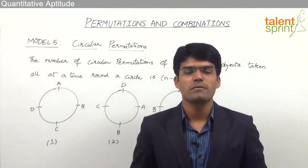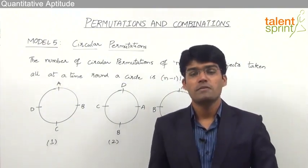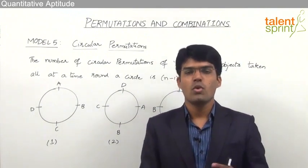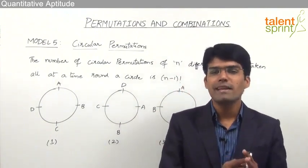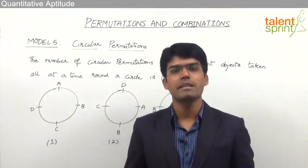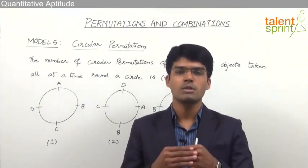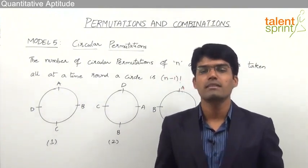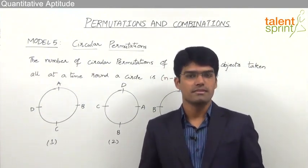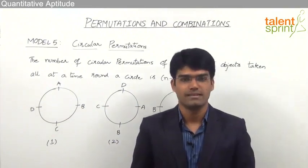Let us now take the fifth model from the topic of permutations and combinations where we shall discuss about circular permutations. So far whatever we had learned was all about linear permutations, that is arrangement of objects in a straight line or in a row. But here in this model we shall see circular permutations, that is nothing but arrangement of objects around a circle.